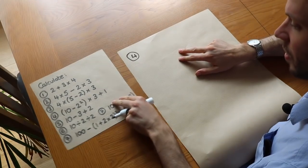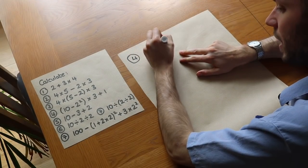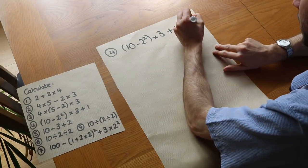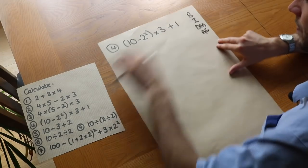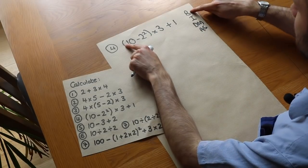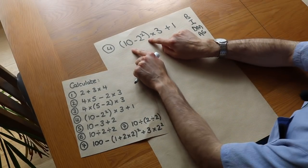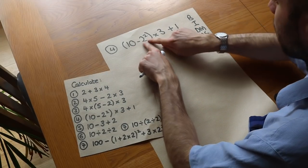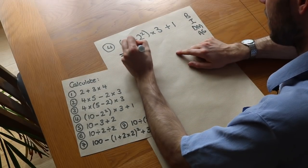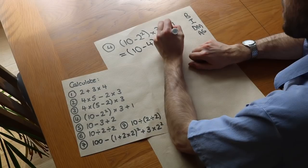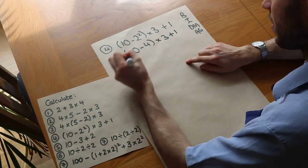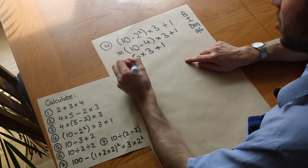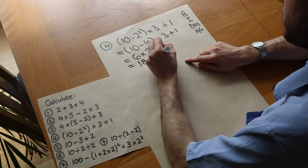The fourth example: (10 minus 2 squared) times (3 plus 1). We have brackets, so we do them first. Inside the brackets, BIDMAS still applies — we have a power, so we do 2 squared first, which is 4. That gives us 10 minus 4, which is 6. So now we have 6 times (3 plus 1). Multiplication comes before addition, so that's 6 times 3, which is 18, plus 1, which equals 19.